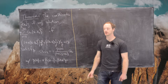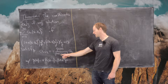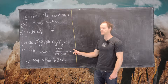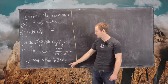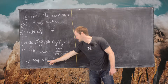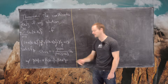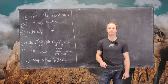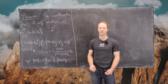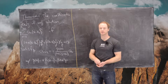So a_{n+2} equals negative P(n) over (n+1)(n+2) times a_n, where P(n) is the polynomial α·n·(n−1) plus β·n plus γ, and α, β, and γ are given as part of the structure of the differential equation.